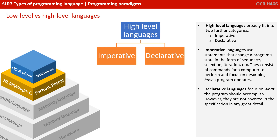High-level languages fit into two further categories in a broad sense: imperative and declarative. Imperative languages use statements that change a program's state in the form of sequence, selection, and iteration. They consist of commands for a computer to perform and focus on describing how a program operates — these are the languages that you've been learning. Declarative languages, on the other hand, focus on what the program should accomplish. However, these aren't covered in the specification in great detail, so we won't go into them any further.